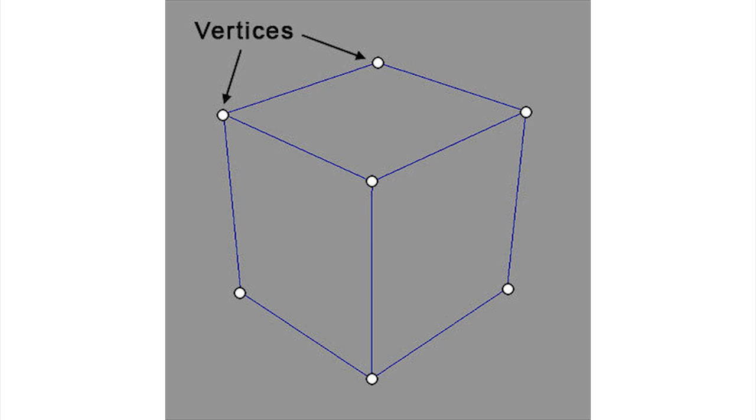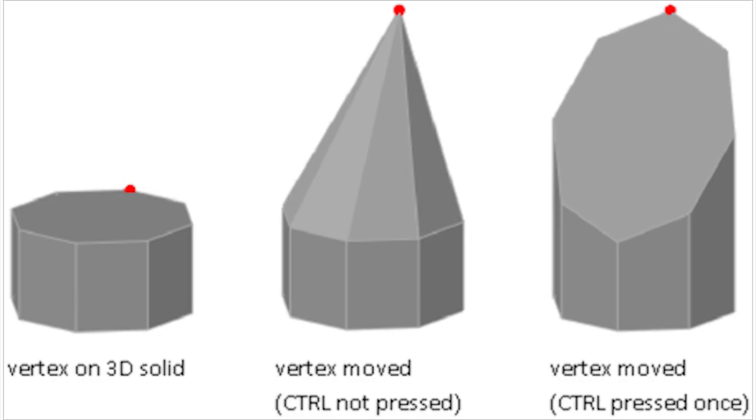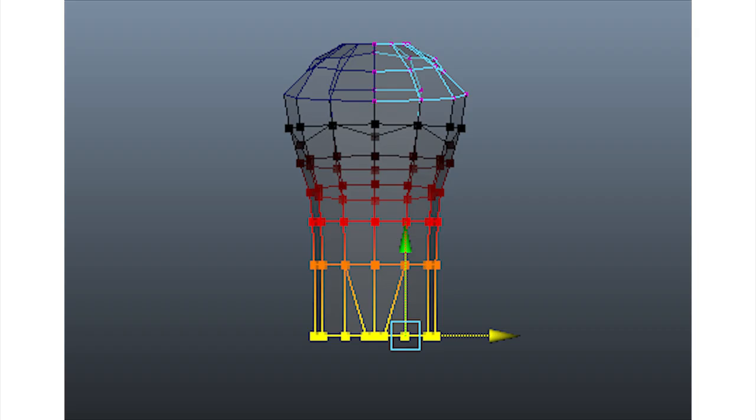Each vertex has its own coordinate information, so x, y, z values. And moving these vertices is a common method of shaping models. In this example, you can see vertices highlighted in a mesh.